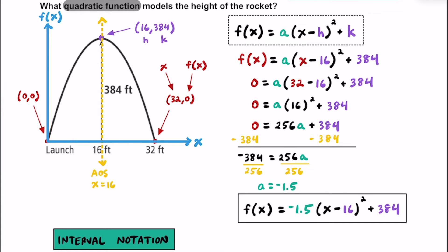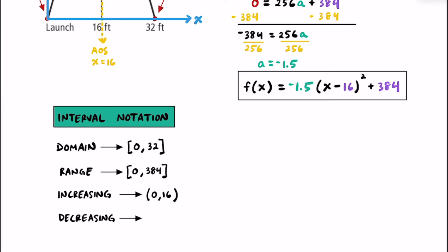For the interval in which the rocket is decreasing, that's going to happen at the vertex and it keeps decreasing all the way until it hits the ground. The vertex and the ground are not included since at those points it's neither increasing nor decreasing. So the decreasing interval starts at x equals 16 and stops at x equals 32, written as (16, 32).